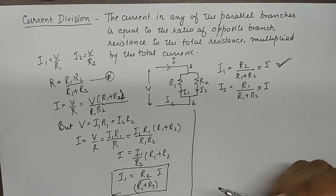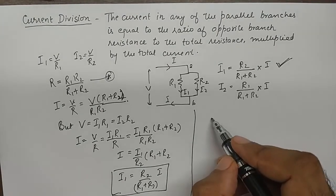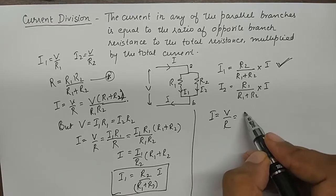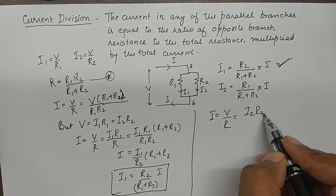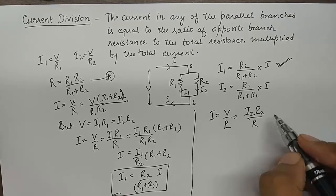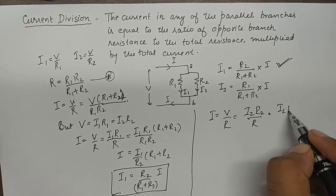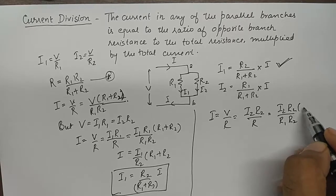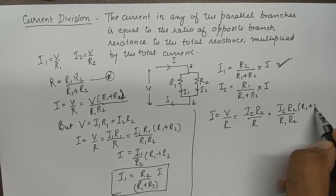And similarly, if we substitute I as V by R again, and this time we say it is I2 R2 upon R, we can write it as R1 R2 upon R1 plus R2.